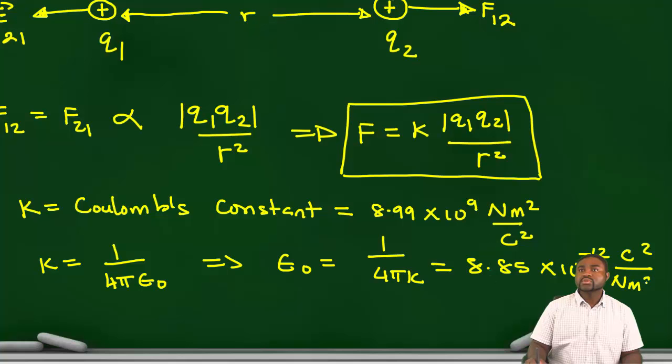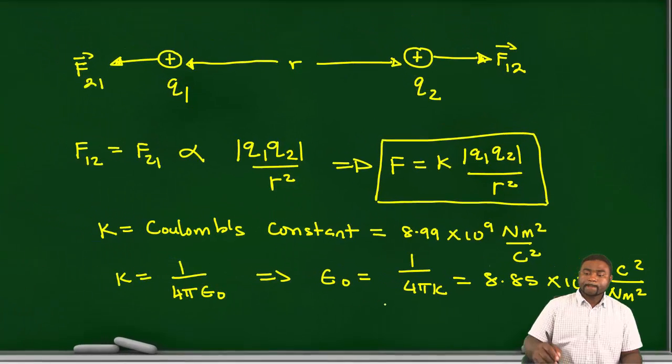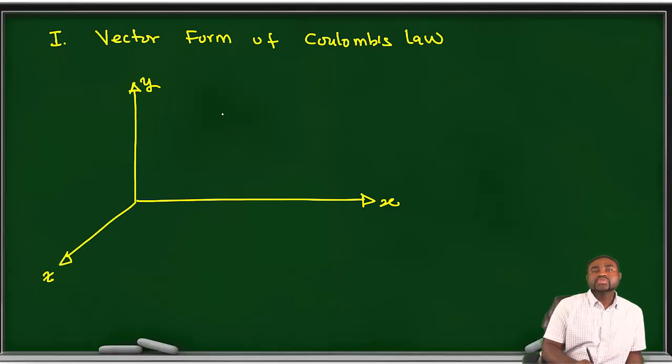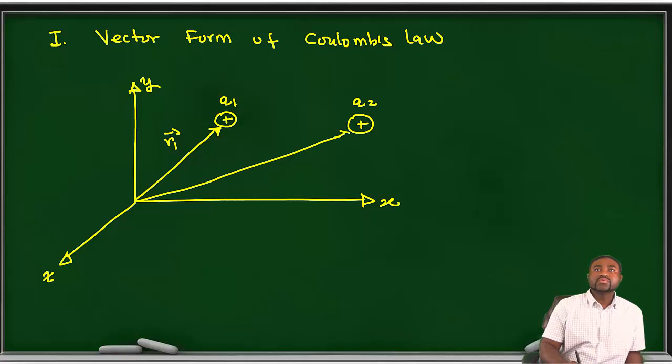Let's look at the vector form of Coulomb's law. So if we have two charges Q1 and Q2, let the position vector of Q1 be R1 and let the position vector of Q2 be R2, then the displacement vector from Q1 to Q2, this is R12.